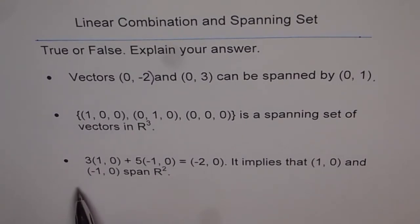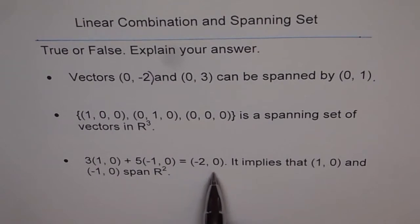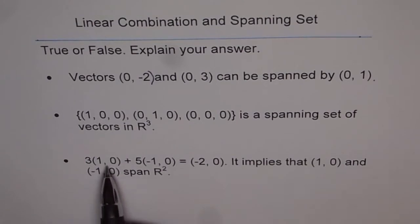Part three. Three times (1,0) plus five times (-1,0) equals (-2,0). It implies that (1,0) and (-1,0) span R². True or false? So take your time, answer the questions and then listen to my suggestion.